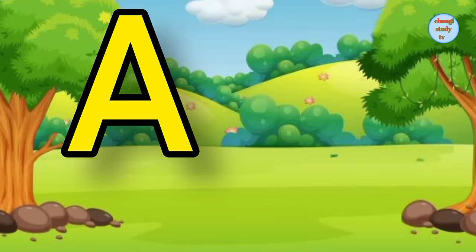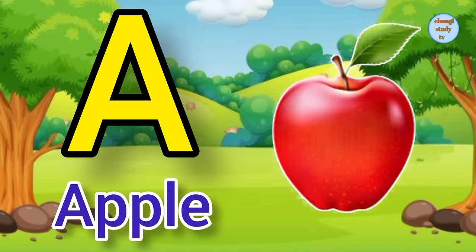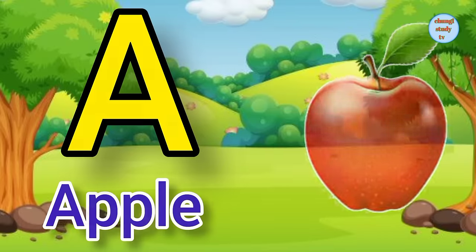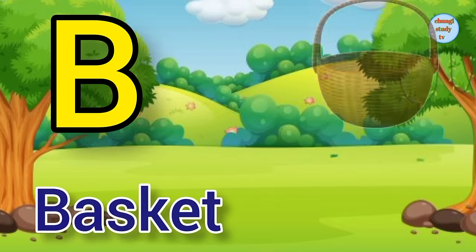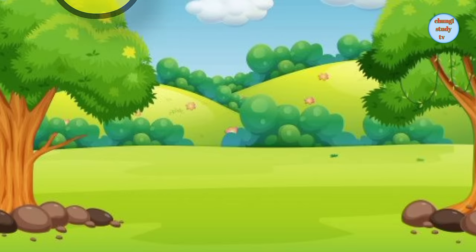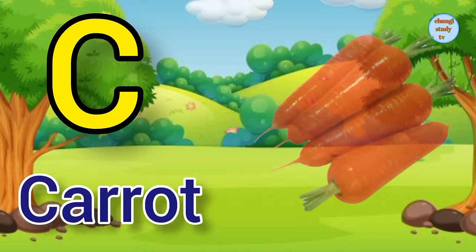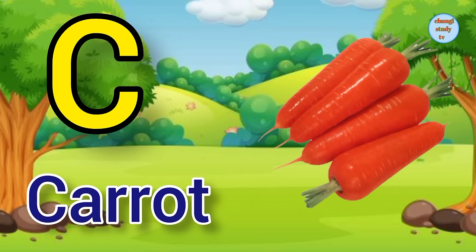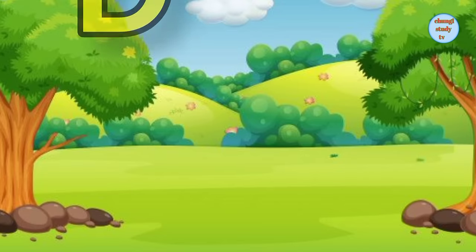A. A for apple, apple means shape. B. B for basket, basket means stockery. C. C for carrot, carrot means gajar.